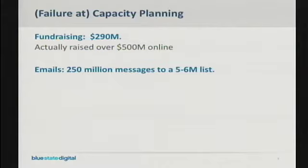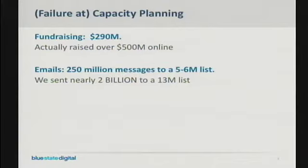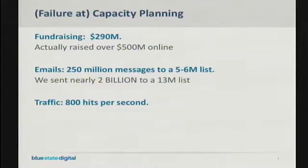We kind of missed that one too. By the end of the campaign, we had 13 million people on the list, and from February of 2007 to November of 2008, we sent nearly 2 billion emails. Lastly, we figured we'd need capacity to support about 800 hits per second on our web servers — obviously a whole lot more than we saw during the 2006 midterms.